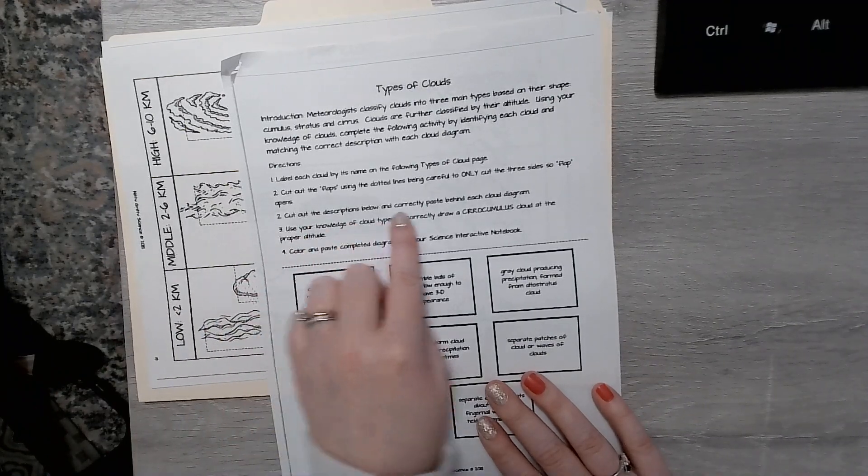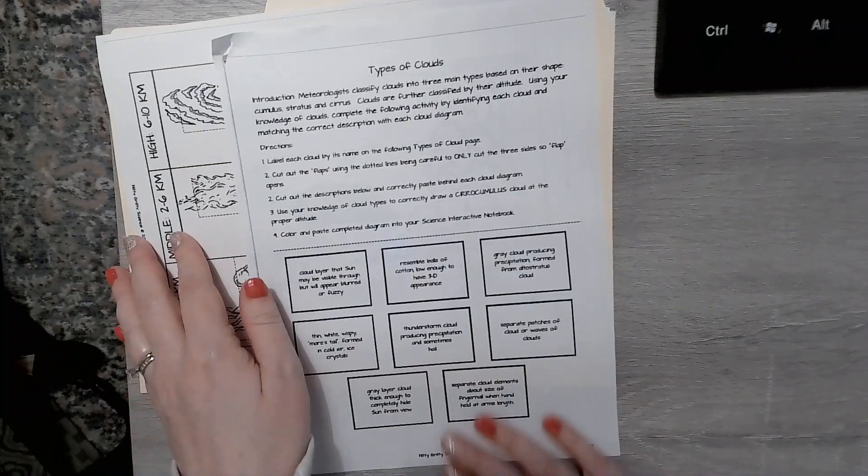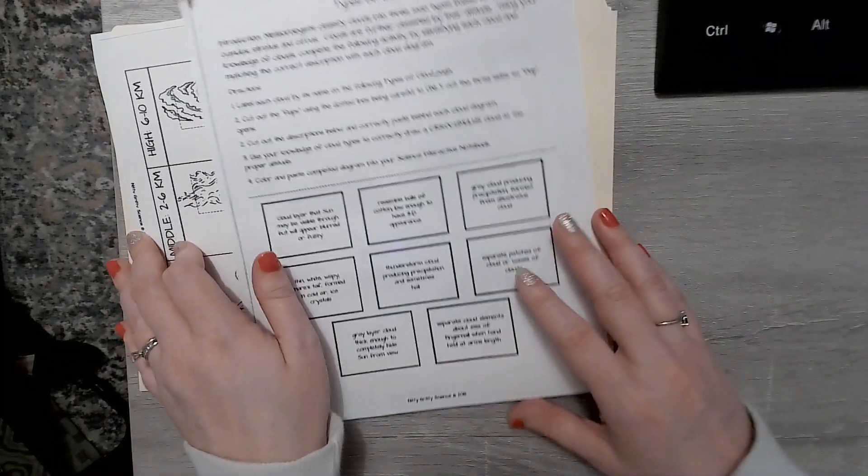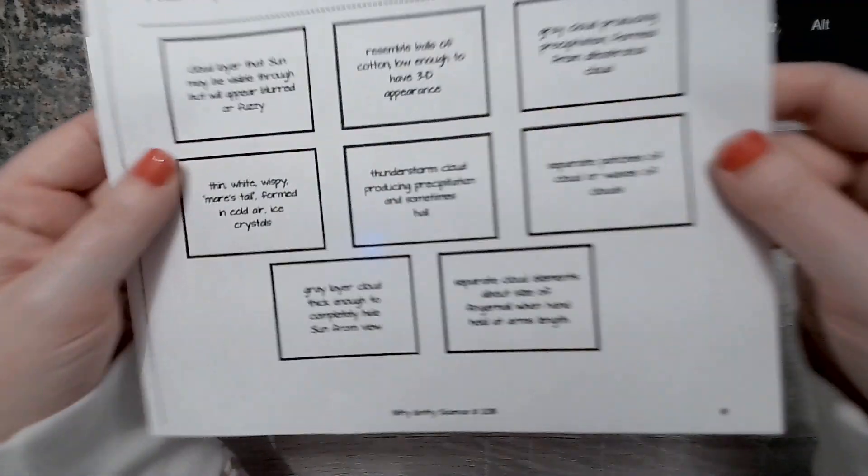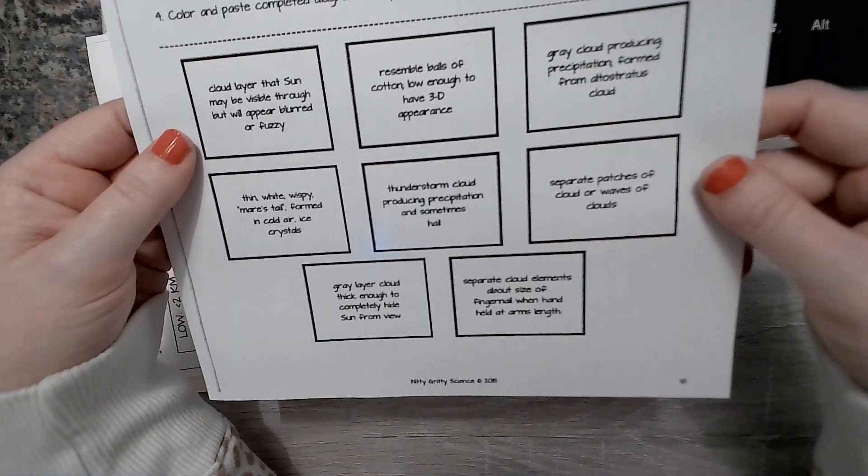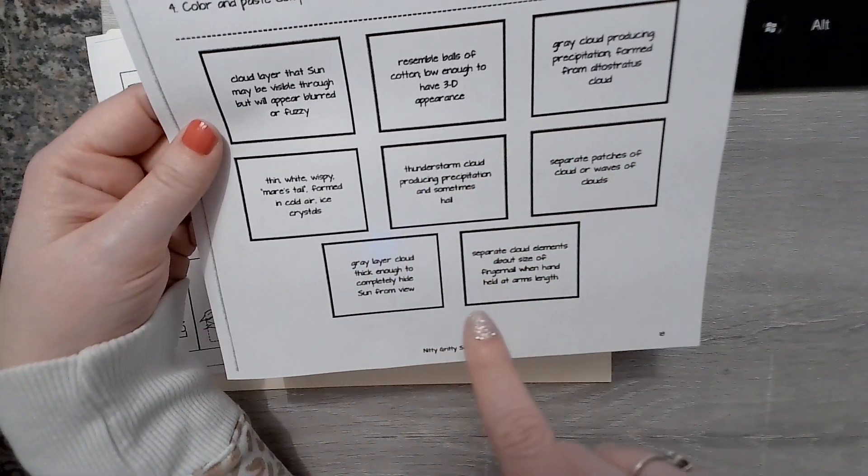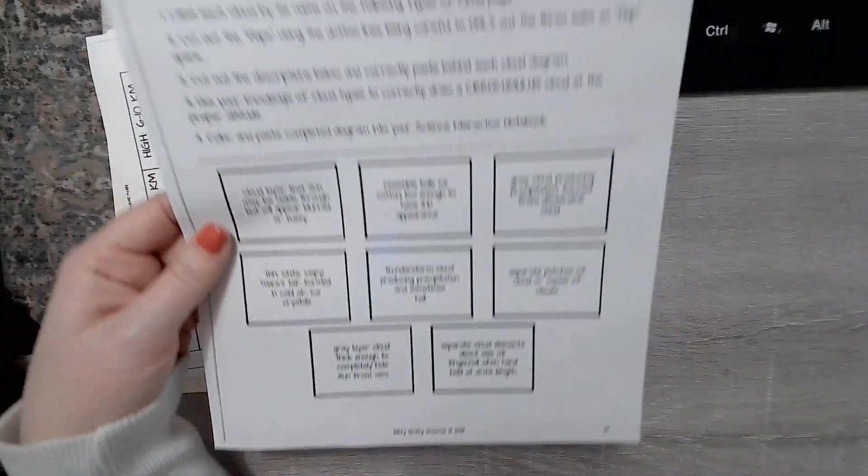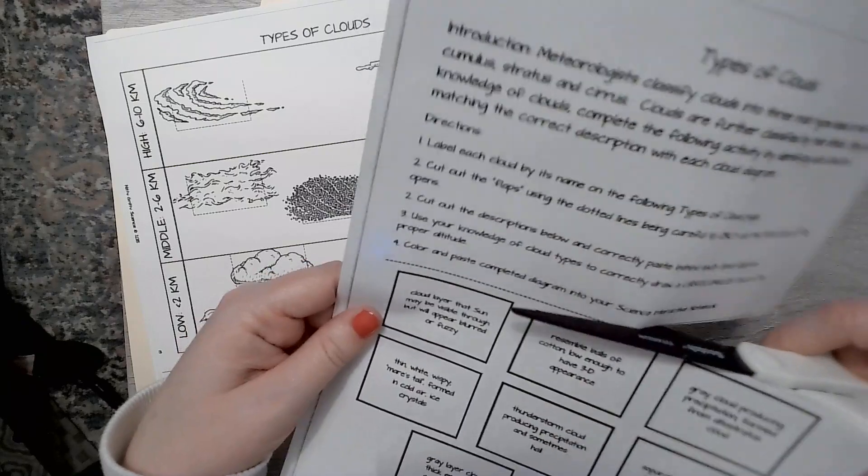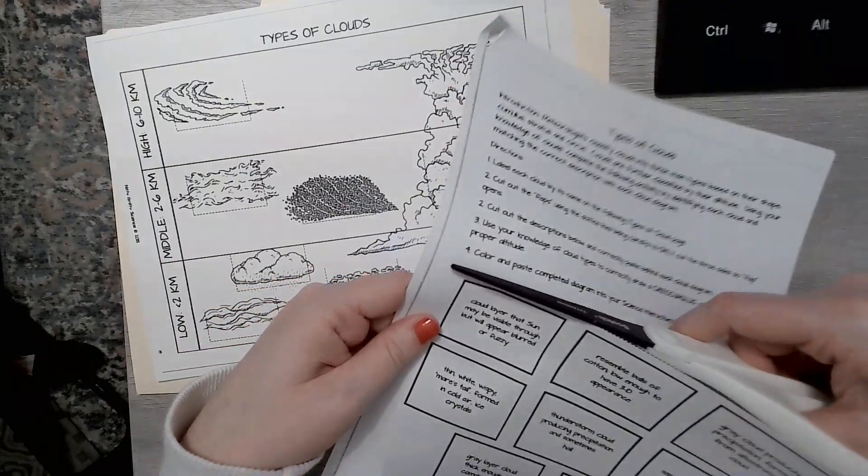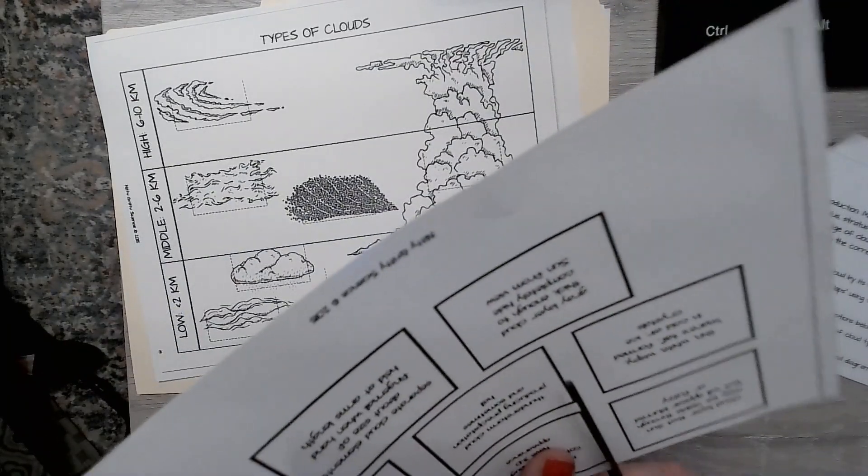Now number two, cut out the description below and correctly paste behind each cloud diagram. So if we look here, we have our eight different little definitions. What you're going to do is through this and what I found that works the best is if you cut it out and you first just place the descriptions on which clouds you think it is.